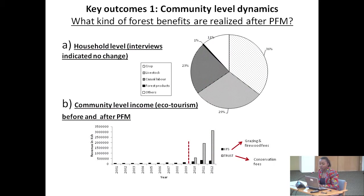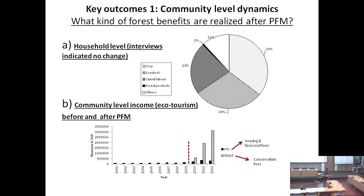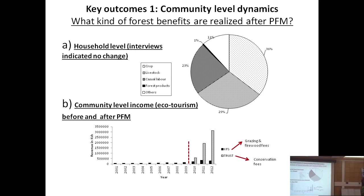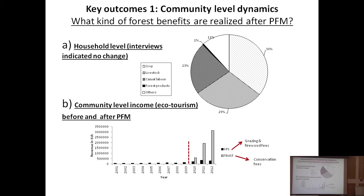What have been the outcomes? Looking at community-level dynamics, surveys and interview data indicated there was not much change at the household level, because dependence on the forest for livestock grazing, water provision, and firewood collection remained the same. But what did change is that after PFM, the community started collecting revenues from 2010 — shown as the bars with lines — revenue collected from tourists visiting the forest and invested into community development.